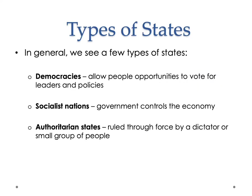There are three types of states overall today: democracies, which allow people opportunities to vote for leaders and policies; socialist nations, which can be democracies, but where a government has some control over the economy; and authoritarian states, which are ruled by force by a dictator and/or a small group of people. Democracies are a relatively recent trend, basically starting around 1800, and even democracies are limited in their democratic capacity and how democratic they really are.